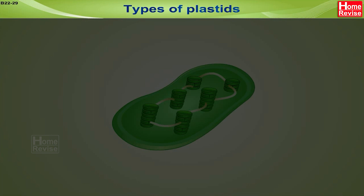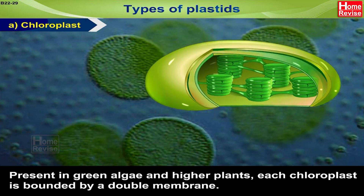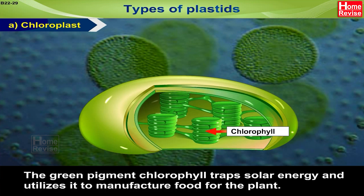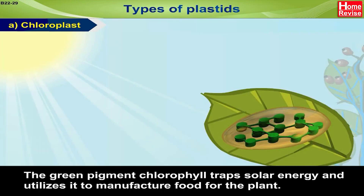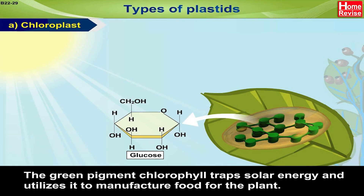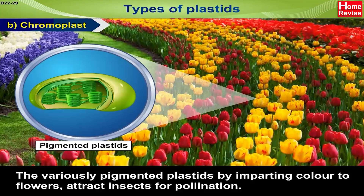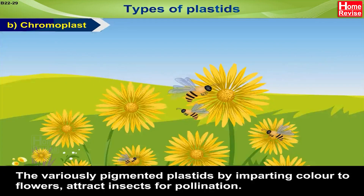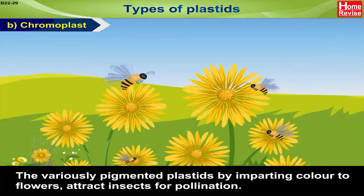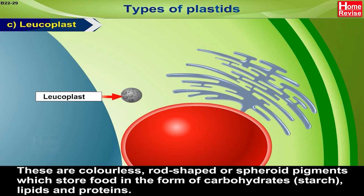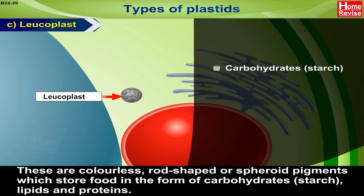Types of Plastids. A. Chloroplast — present in green algae and higher plants. Each chloroplast is bounded by a double membrane. The green pigment chlorophyll traps solar energy and utilizes it to manufacture food for the plant. B. Chromoplast — the variously pigmented plastids, by imparting color to flowers, attract insects for pollination. C. Leukoplast — these are colorless, rod-shaped or spheroid plastids which store food in the form of carbohydrates (i.e., starch), lipids and proteins.